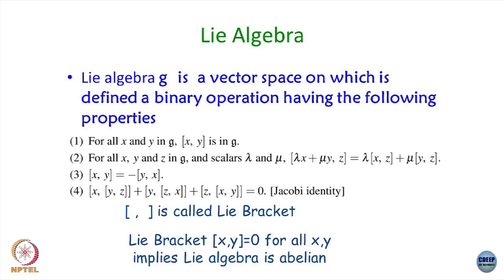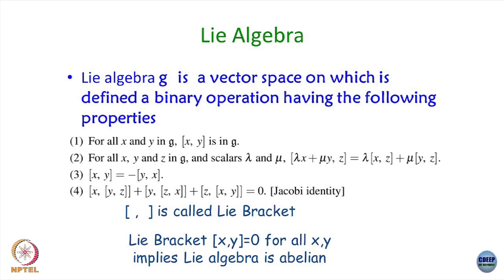If the Lie bracket is 0 for all x, y — when does this happen? In our case, the translation group: the generators of translation p_x, p_y, p_z constitute a Lie algebra, but it is an Abelian Lie algebra because [p_x, p_y] = 0 and so on. In general, if all elements of this vector space commute with each other, you call it an Abelian Lie algebra.